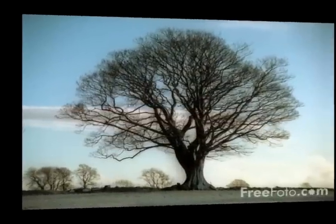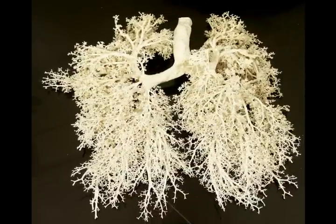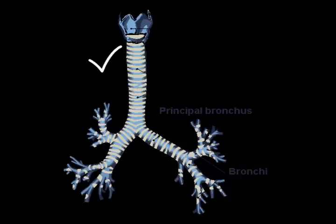Think of it like a tree — the main stem bronchi are like the tree trunk, the secondary bronchi are the bigger branches, the tertiary bronchi are the smaller branches, and the bronchioles are like the tiny buds and twigs. The airways keep branching into smaller and smaller airways, like an upside-down tree. So we've done the trachea, the right and left main stem bronchi, primary, secondary, and tertiary bronchi, ending in the bronchioles. Bronchioles are wrapped in smooth muscle with no cartilage.